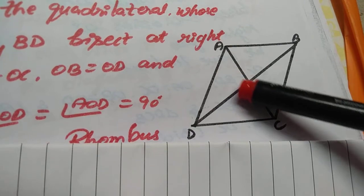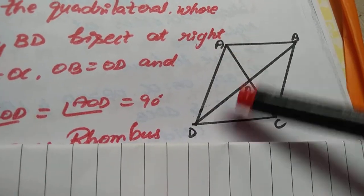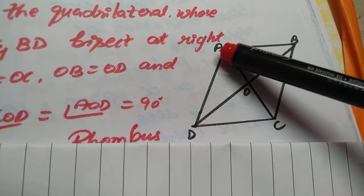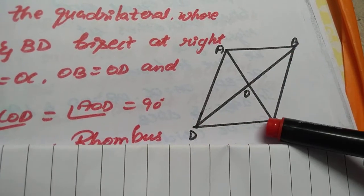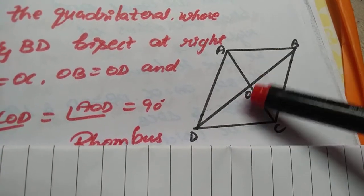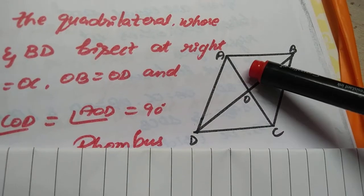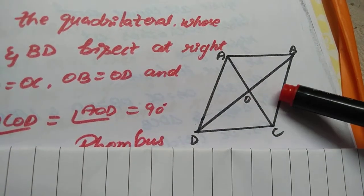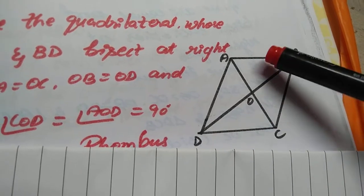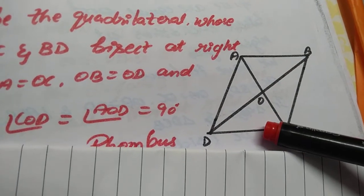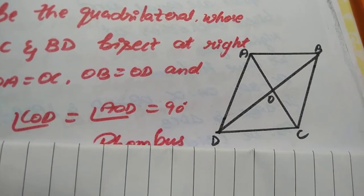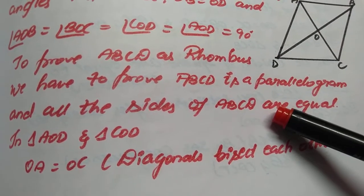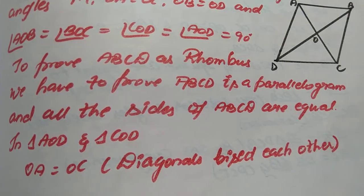Similarly, when I consider these two triangles AOB and DOC, I can say AB equal to DC by proving these two triangles as congruent. Hence, when the opposite sides of the quadrilateral are equal, I can say this is a parallelogram. Kindly copy in your notes.